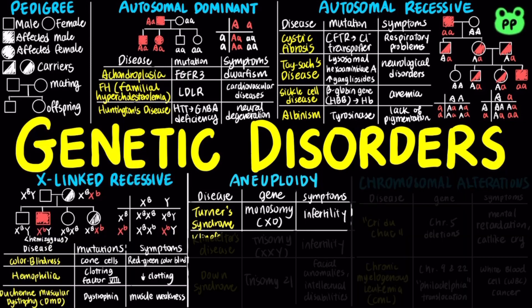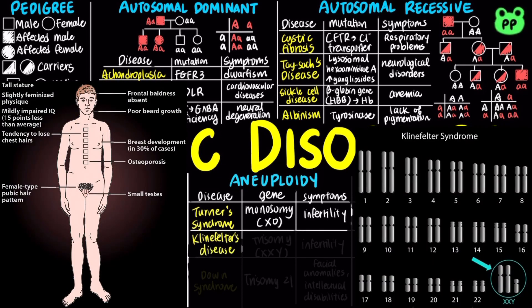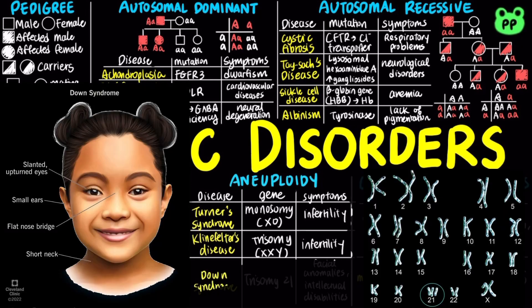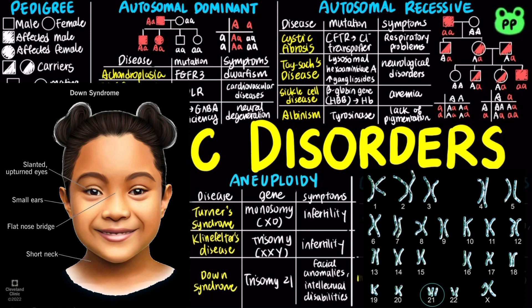A trisomic zygote has three copies of a particular chromosome. For example, Klinefelter syndrome involves two X chromosomes and one Y chromosome, leading to sterile males. Down syndrome involves trisomy 21, which leads to facial anomalies and intellectual disabilities. The frequency of Down syndrome increases with the age of the mother, a correlation that has not been fully explained.